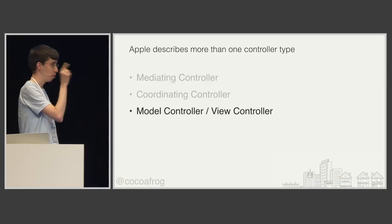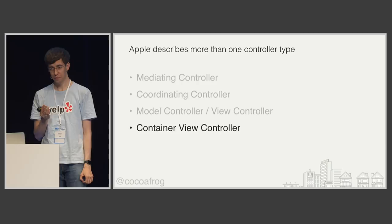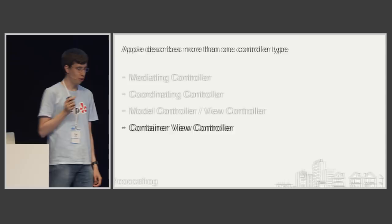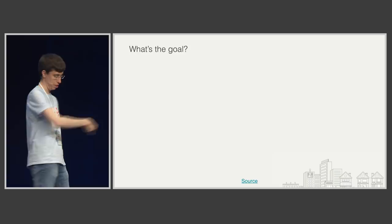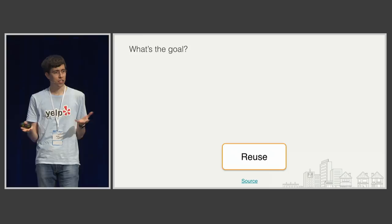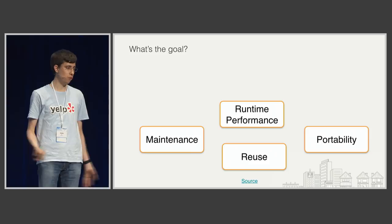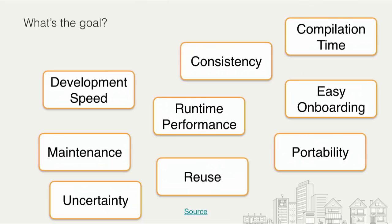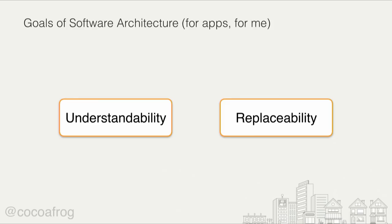Before getting into container view controllers, I want to step back and go to our theory corner. What do we even want from Model-View-Controller, or from software architecture in general? We might want reuse, portability, maintenance, runtime performance, or many other things. But as always, these goals are conflicting, so you have to decide which ones are actually important to you and focus on those. For app development, I think it makes sense to focus on two things: understandability and replaceability.